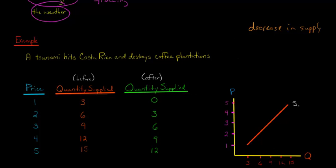That means that the curve is going to shift to the left. But I want to show you why it's going to shift to the left. If we look at each price, let's look at one dollar for example. It used to be before the tsunami, the quantity the producers were willing to supply was three million pounds of coffee. But now at one dollar, the producers are only willing to supply zero coffee. They're not willing to give any coffee at all.